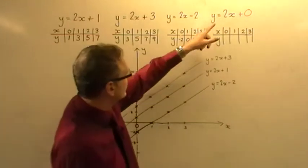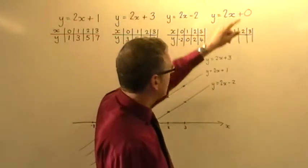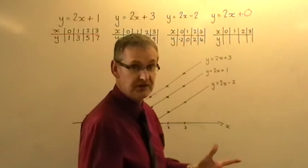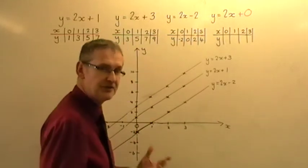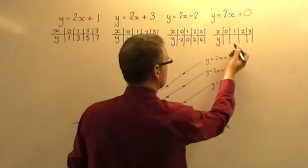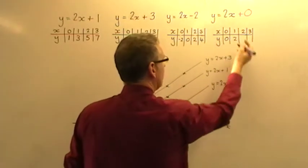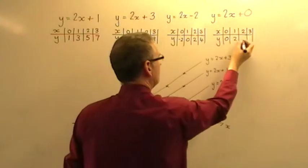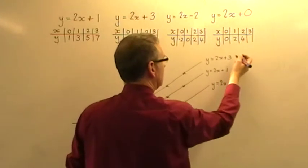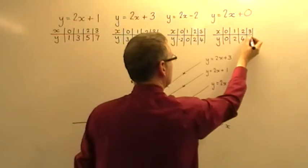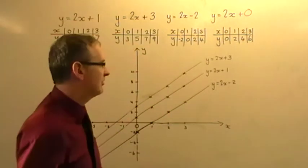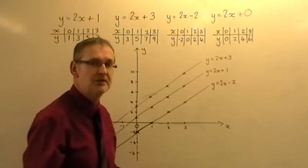Let's do the last one. This one here is y is simply equal to 2 times the x value, plus 0 if you want, but it doesn't make any difference. So if x is 0, 2 times 0 is 0. If x is 1, 2 times 1 is 2. If x is 2, 2 times 2 is 4. If x is 3, y will be 2 times 3, which is 6.